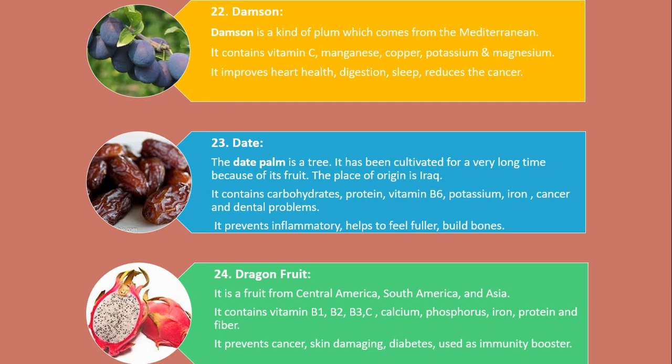Number 23. Date. The date palm is a tree. It has been cultivated for a very long time because of its fruit. The place of origin is Iraq. It contains carbohydrates, protein, vitamin B6, potassium and iron. It prevents inflammation, helps to feel fuller, and builds bones.